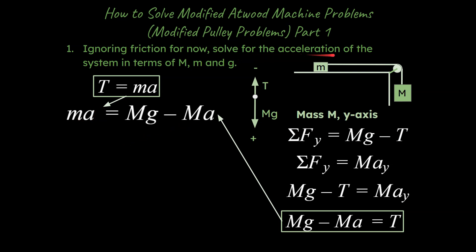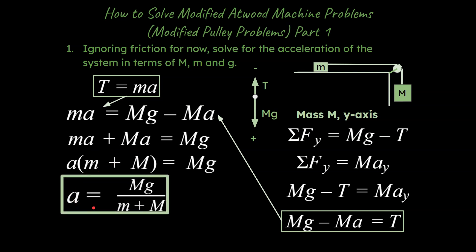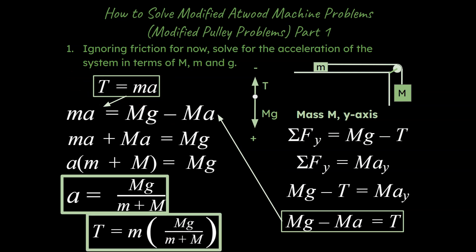The problem asks us to solve for the acceleration of the system. I'm going to get both acceleration terms on the same side, factor out the acceleration, and isolate it. In terms of our variables, that gives us the acceleration of the system. If there's a follow-up question asking to solve for tension, you take the acceleration and plug it back into one of the tension equations. It's easiest to use the simpler equation — tension equals ma — so we go ahead and do that to solve for tension.